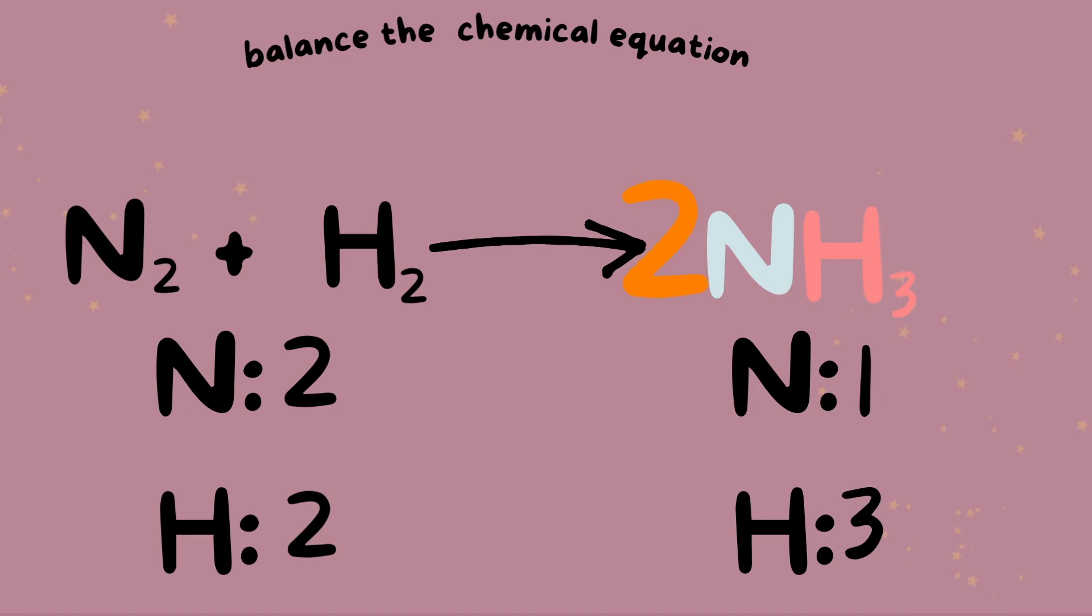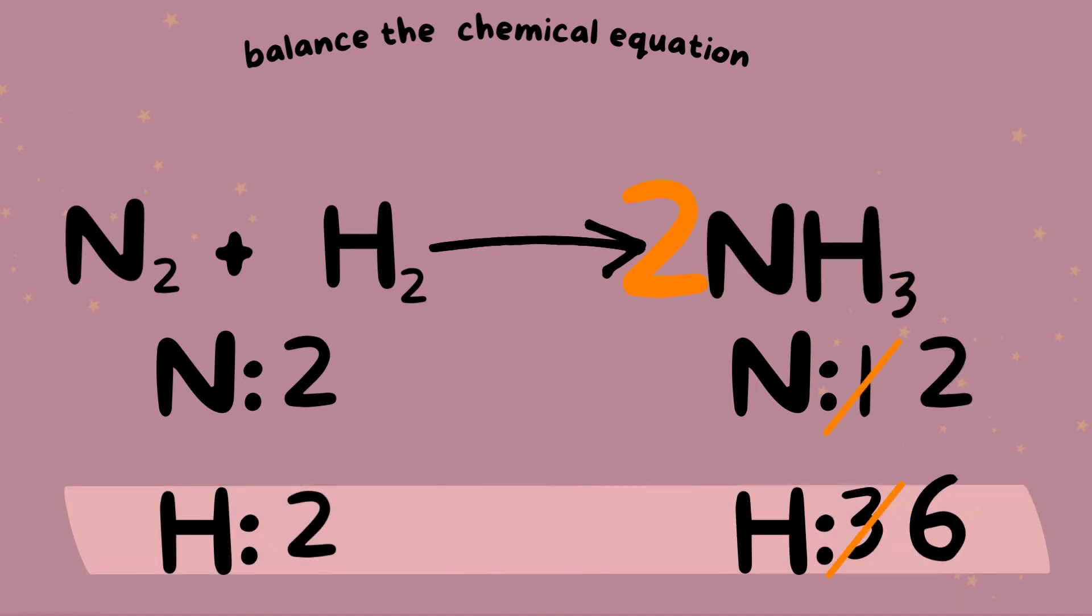If we place a coefficient of two here, we multiply it by both elements and we get two nitrogen and six hydrogen. How can we balance out this ratio of two to six? We can put a coefficient of three here and we get three times two hydrogen. We're left with six hydrogen. So everything is balanced out here. There is equal amounts of atoms of each element on both sides as well as equal amounts of moles.